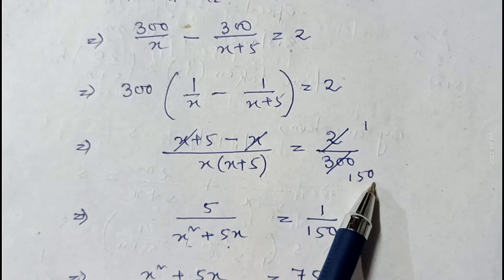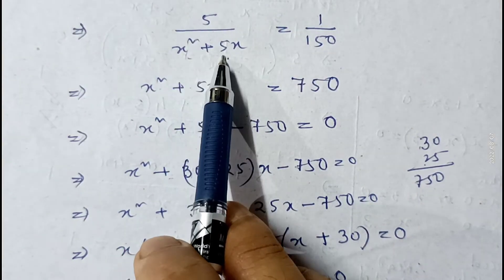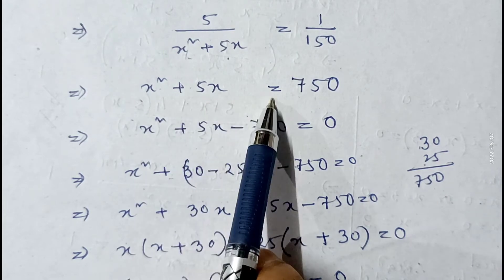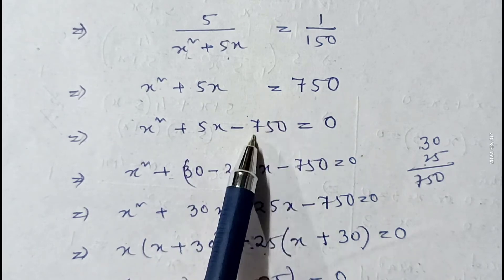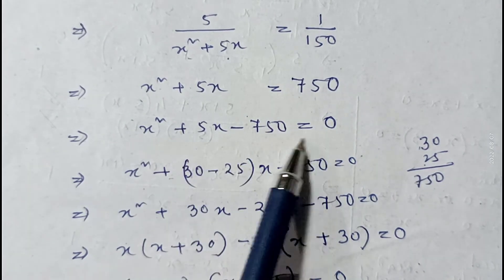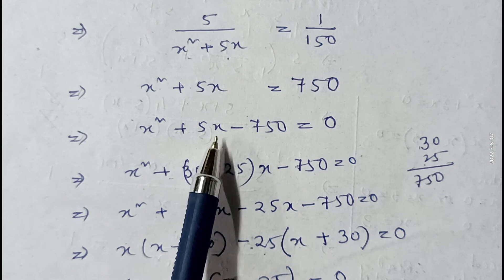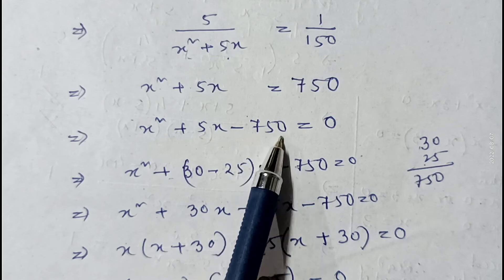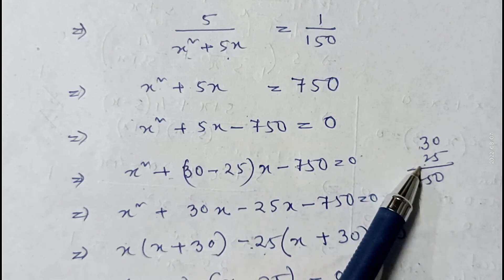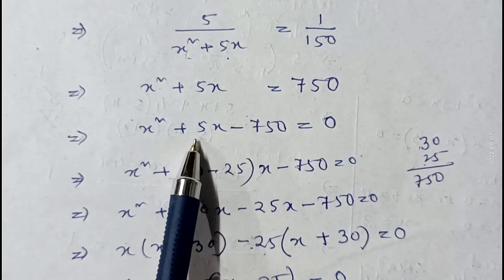Cross-multiplying: x² plus 5x = 750, so x² plus 5x minus 750 = 0. Applying middle term factorization — we need two numbers that multiply to 750 and differ by 5, which are 30 and 25 — so we write x² plus 30x minus 25x minus 750 = 0.